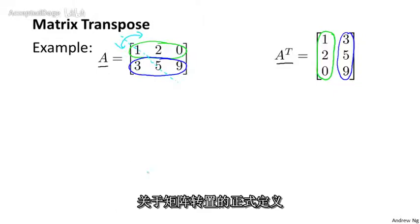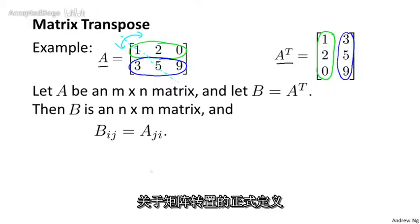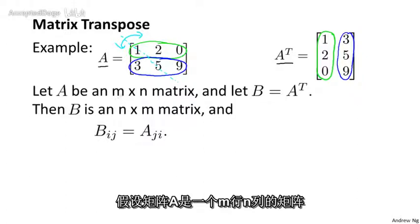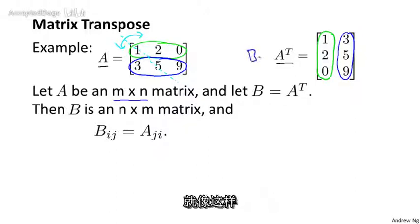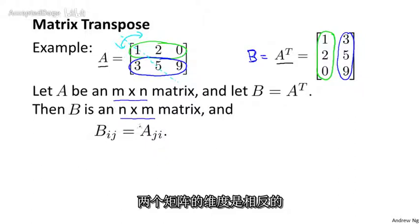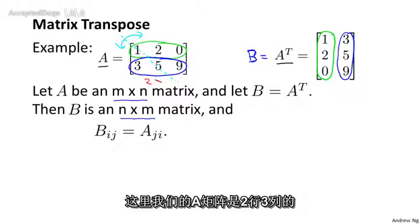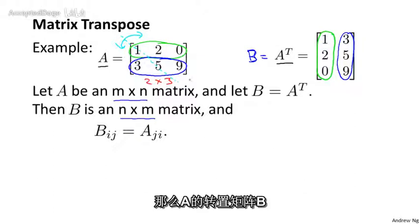So here's the more formal definition of a matrix transpose. Let's say A is an M by N matrix, and let B equal A transpose. Then B is going to be an N by M matrix with the dimensions reversed. So here we have a 2 by 3 matrix, and so the transpose becomes a 3 by 2 matrix. And moreover, B_ij is equal to A_ji. So the i,j element of this matrix B is going to be the j,i element of that earlier matrix A.